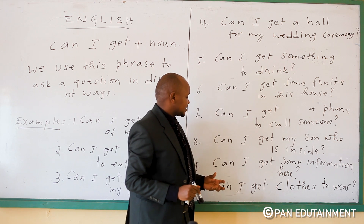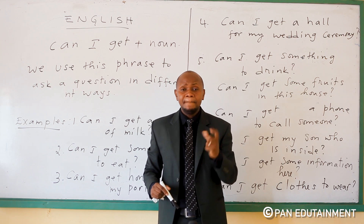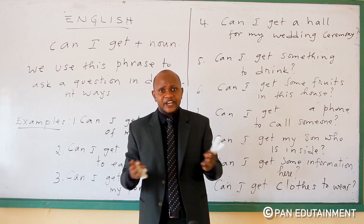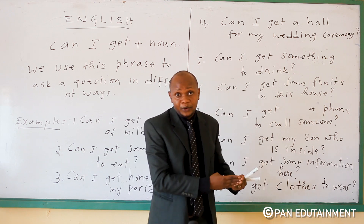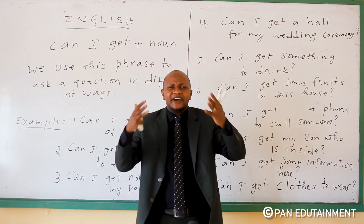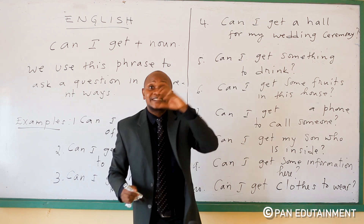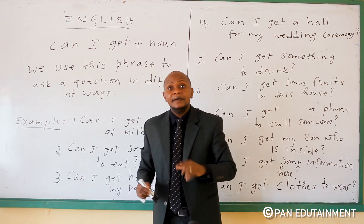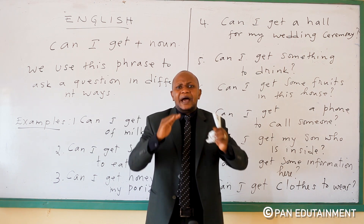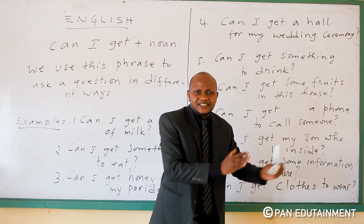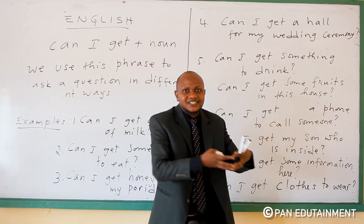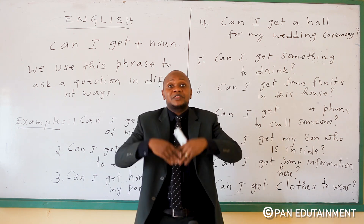Number nine: you can say, 'Can I get some information here?' Maybe you are in an investigation, you are investigating, and you need to get some information from people. At that time, the sentence you are going to use is: 'Can I get some information here?' Because many people are surrounding — maybe there is an accident that has happened. Then you need to get some information from that event.